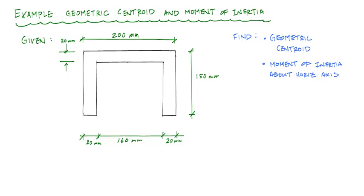Hey, what's going on, everyone? Welcome back to Structure Free. In this video, what we're going to do is calculate the moment of inertia about the horizontal axis for this channel cross section. In order to do that, the first thing we have to do is calculate the geometric centroid using first moment of area calculations. Then we'll use the parallel axis theorem to calculate the second moment of area, which is also called the moment of inertia or resistance to rotation.